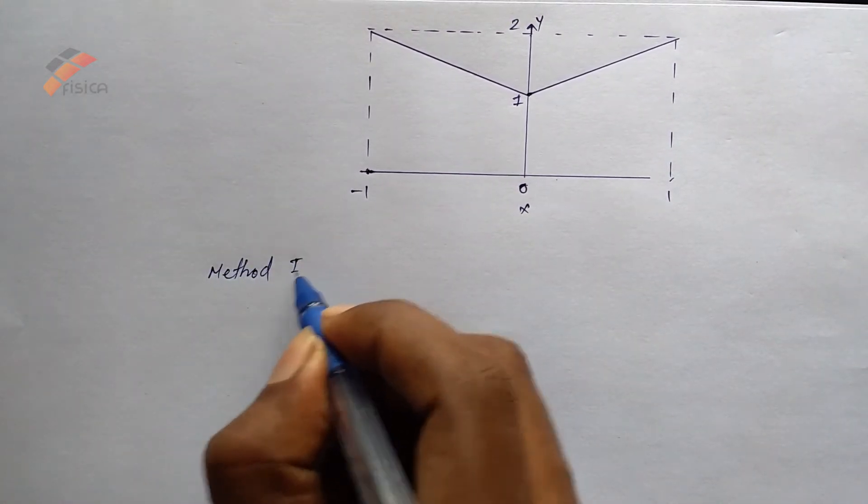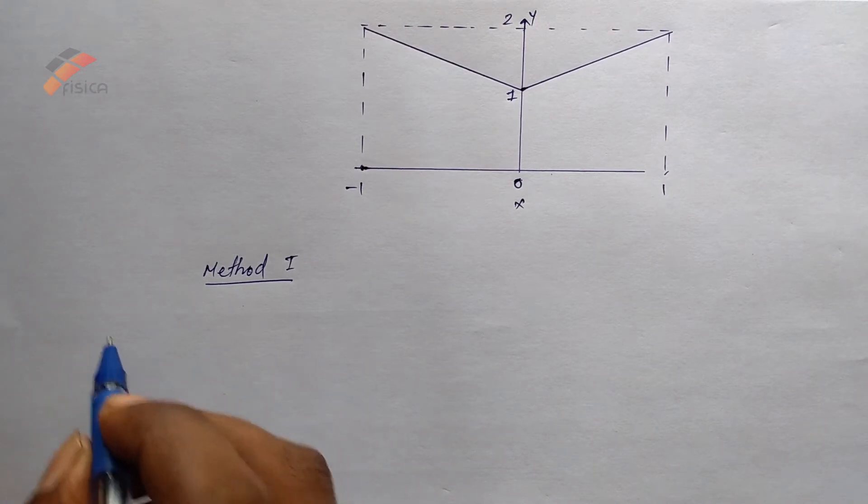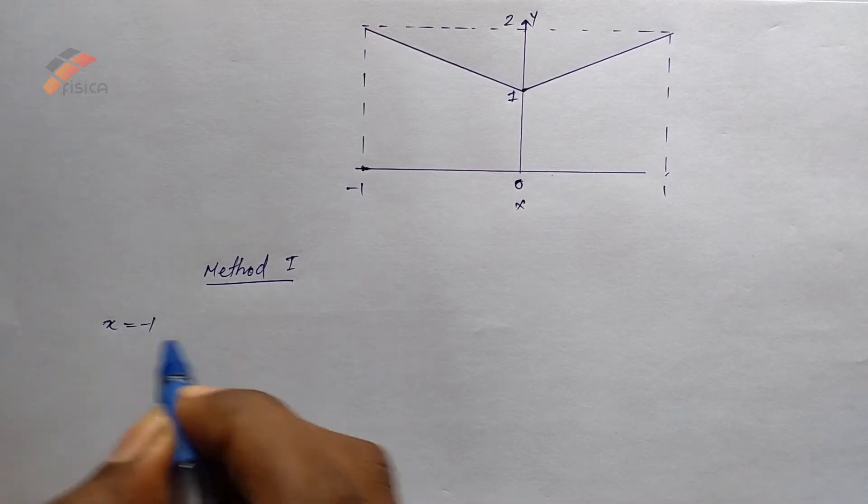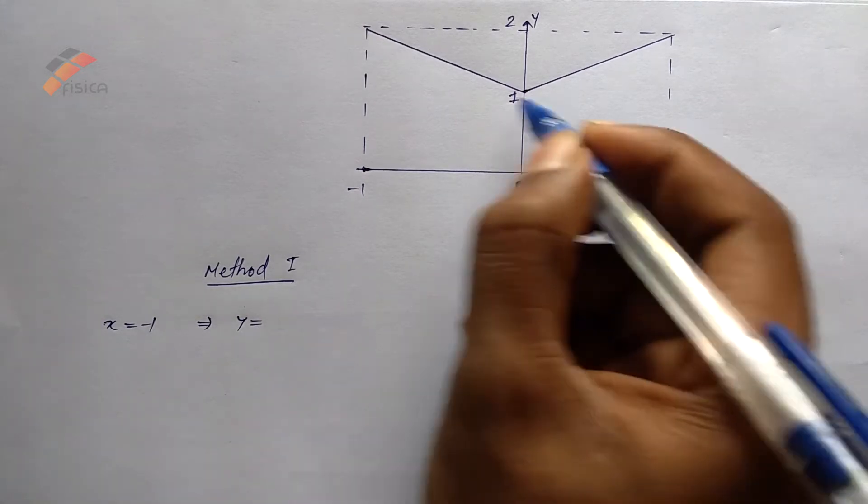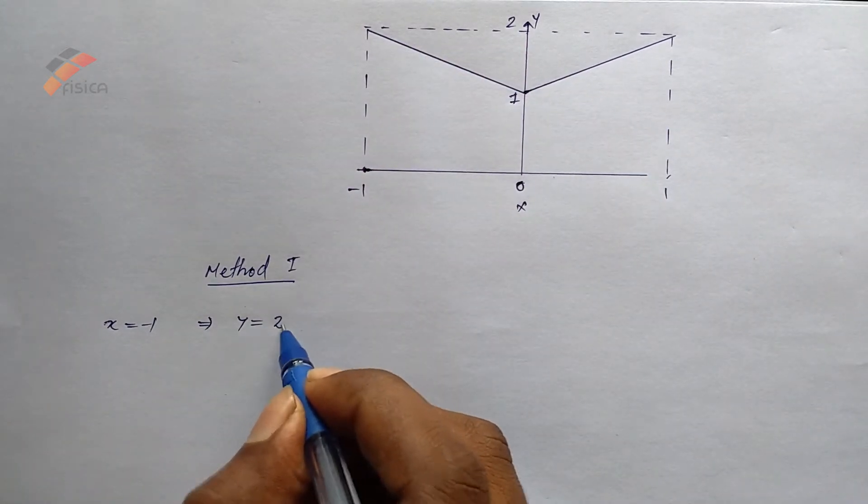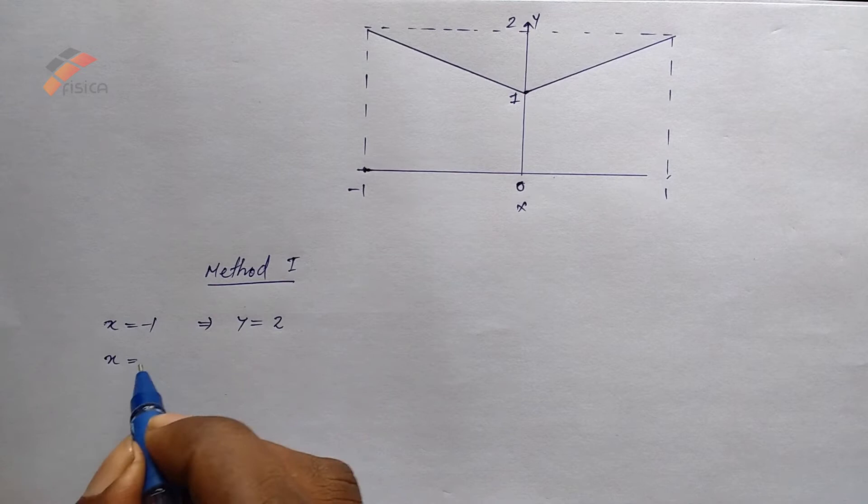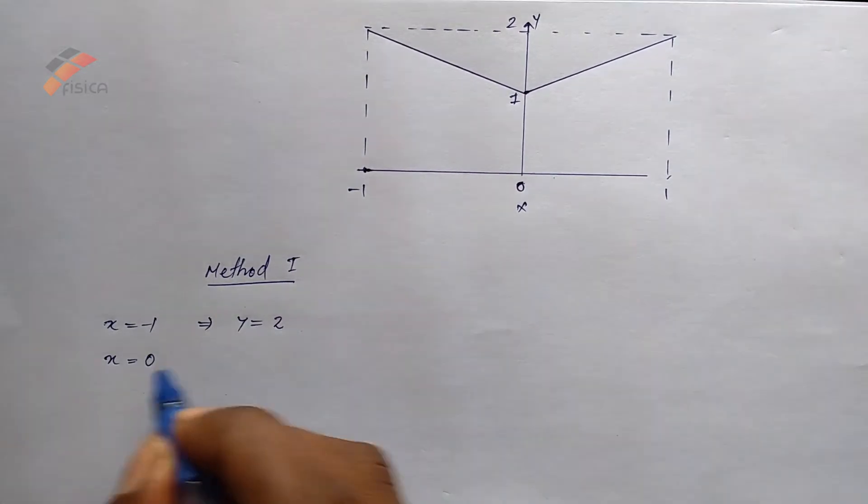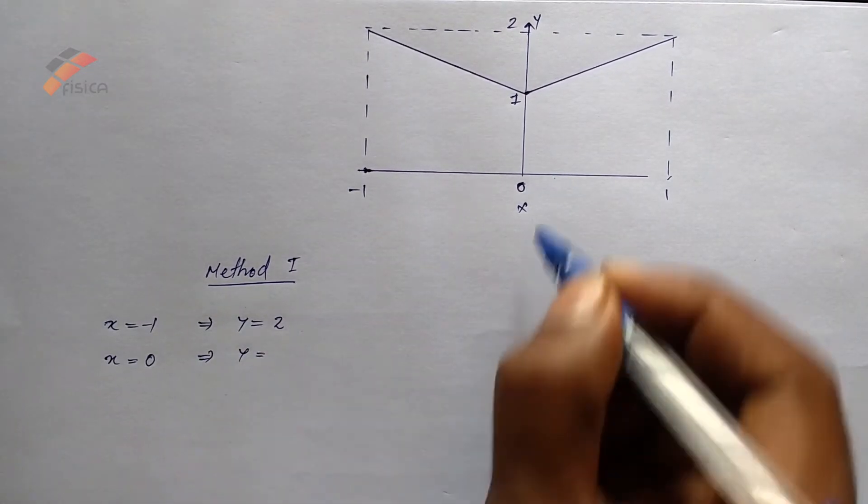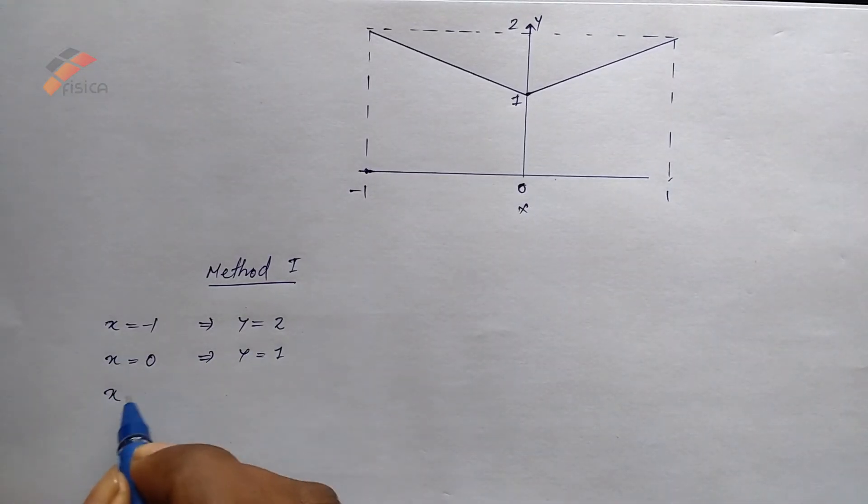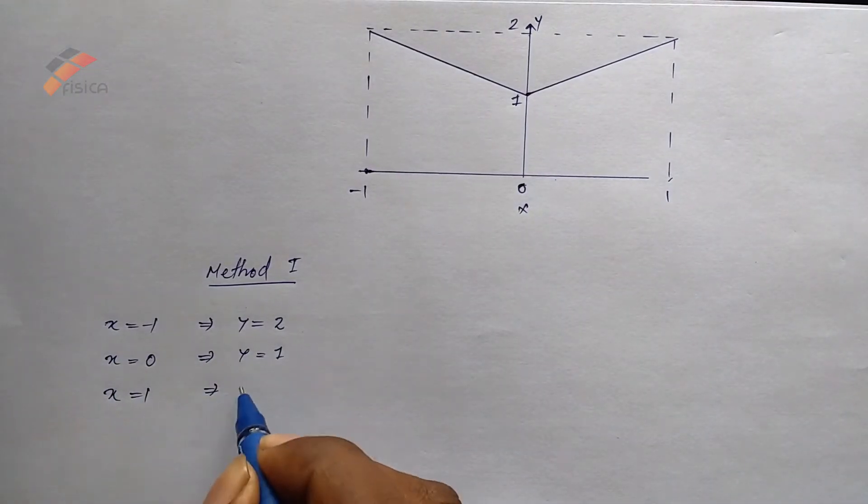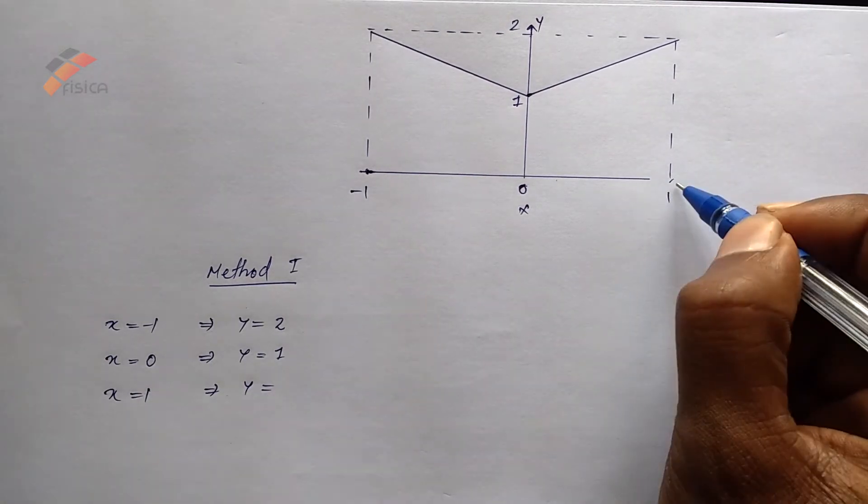Method 1. At x equal to minus 1, y equal to 2. And at x equal to 0, y equal to 1. And at x equal to plus 1, y equal to 2.